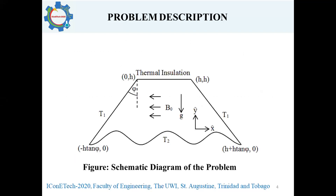The schematic diagram shown here comprises a trapezoidal enclosure with a corrugated bottom wall at temperature T2, which is isothermally heated. The sidewalls of the trapezoidal enclosure are isothermally cooled with temperature T1 and are inclined at an angle psi to the y-axis. The top wall is thermally insulated so that there is no heat transfer through it. There is also an applied magnetic field with magnetic flux B-naught applied horizontally in the x-direction.